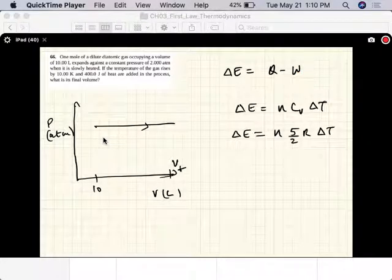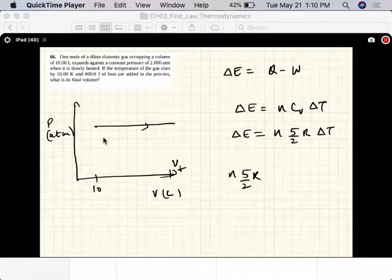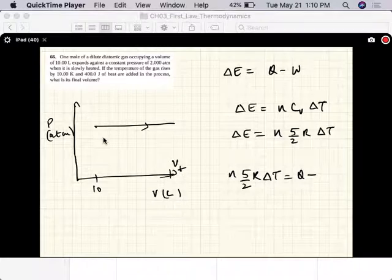We know that work done is P times V_final minus V_initial. So here's n five halves R Delta T equals Q minus W. This is an isobaric process, so work done is P times V_final minus V_initial.